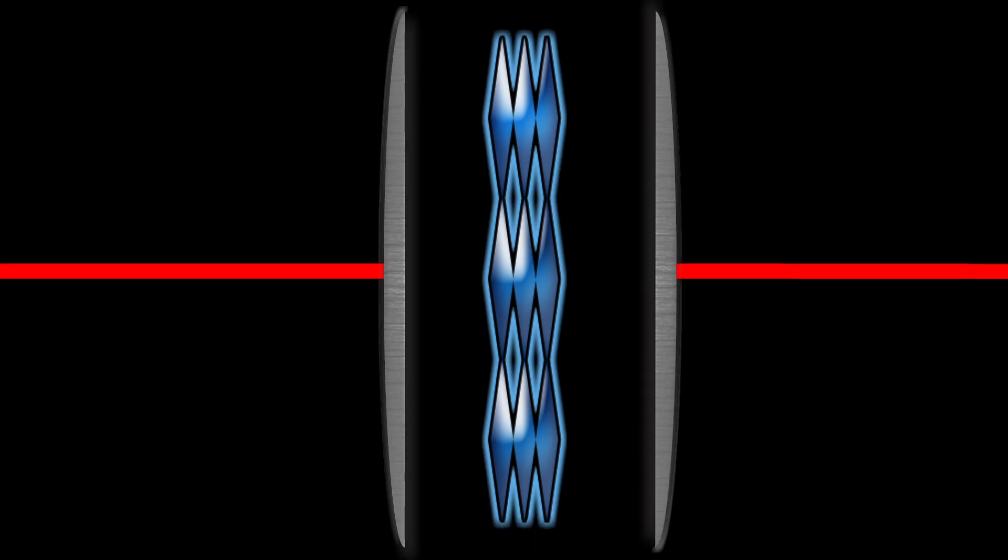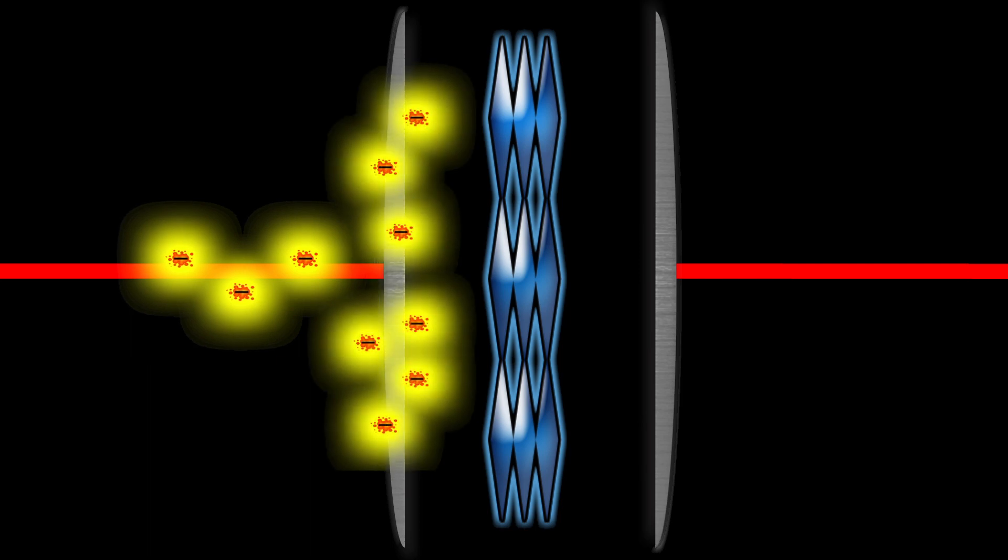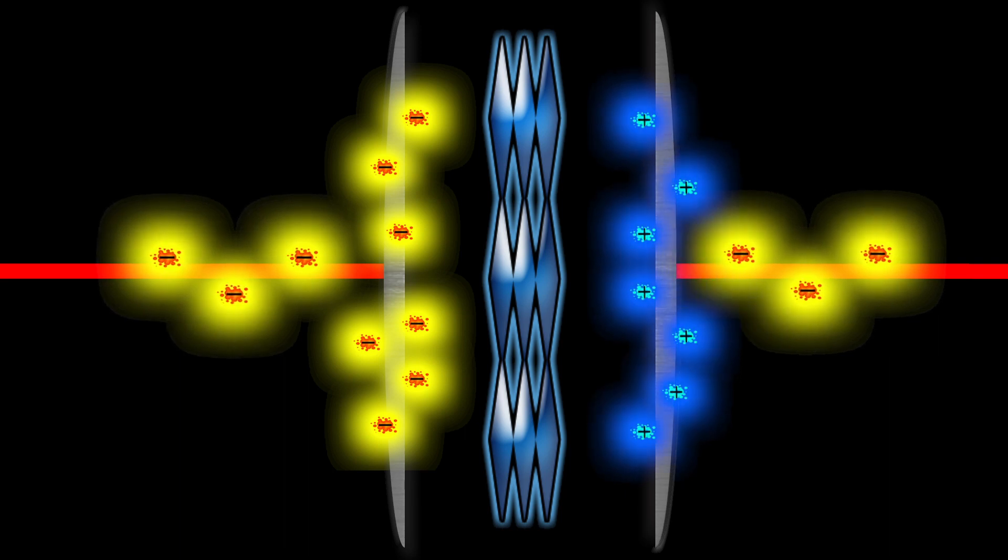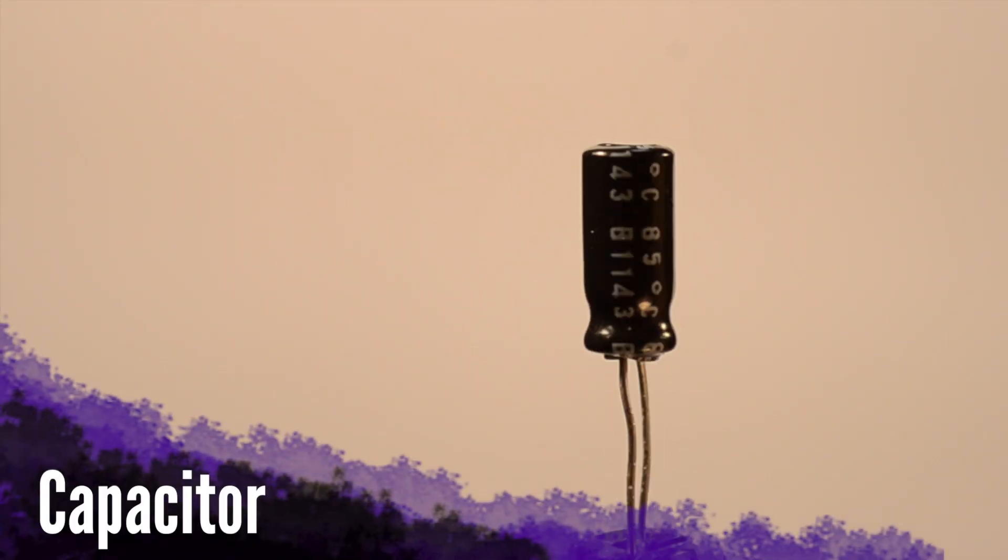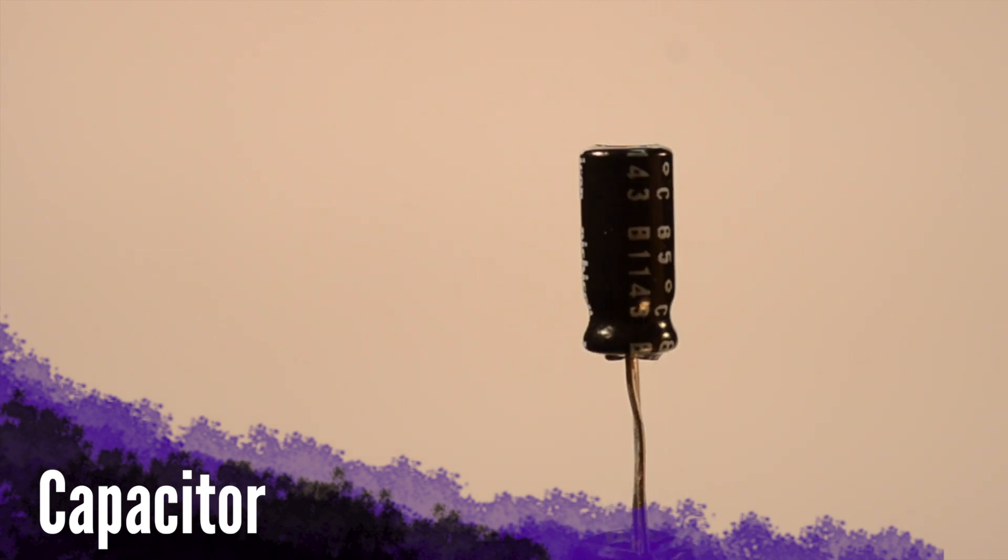When electricity flows into one side of the capacitor, the flood of electrons builds up a negative charge. This excess of negatively charged electrons induces a positive charge on the opposite side and forces its electrons away. When the power source is shut off, however, the capacitor will continue to discharge its energy until its two plates again have an identical charge.